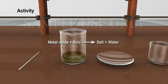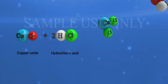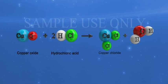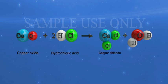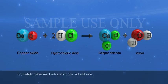Metal Oxide plus Acid gives Salt plus Water. CuO plus 2HCl gives CuCl₂ plus H₂O. So, metallic oxides react with acids to give salt and water.